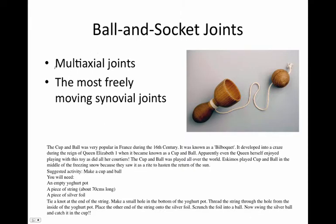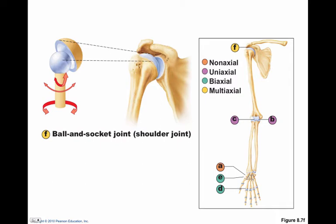Ball and socket joints are multi-axial joints — multi-axial is the key here. They're the most freely moving synovial joints, and for that matter, they're usually the most injured. The classic shoulder joint has a fossa that receives the head of the humerus, referred to as the glenohumeral joint because this is the glenoid fossa or glenoid cavity. The glenoid fossa has a pretty open concave shape to receive the convex head of the humerus.